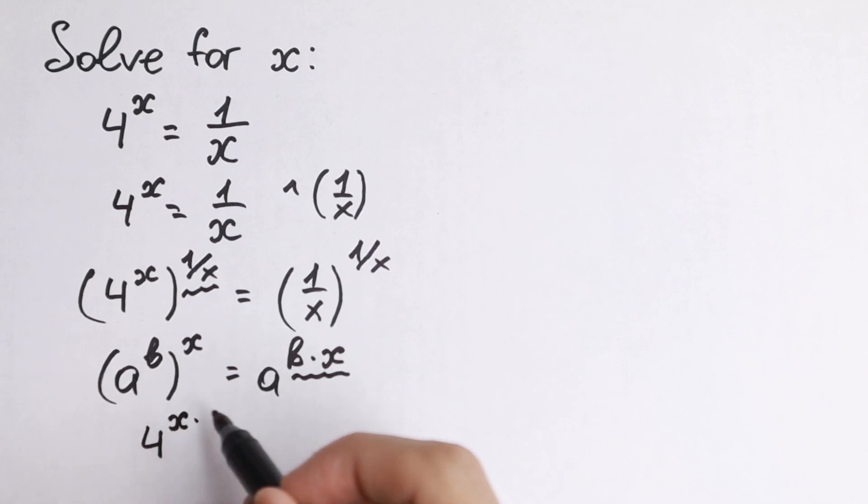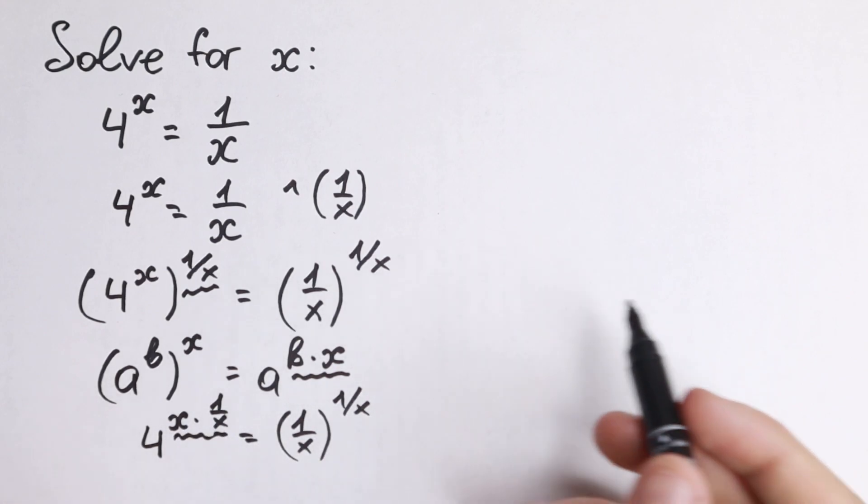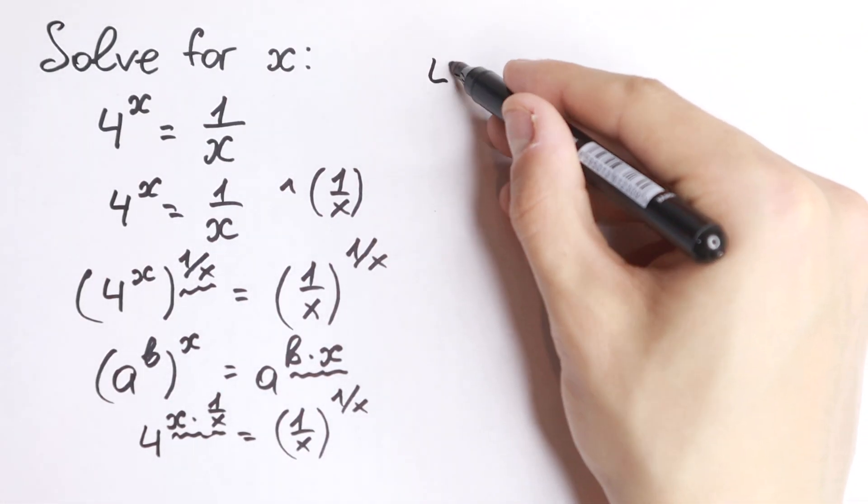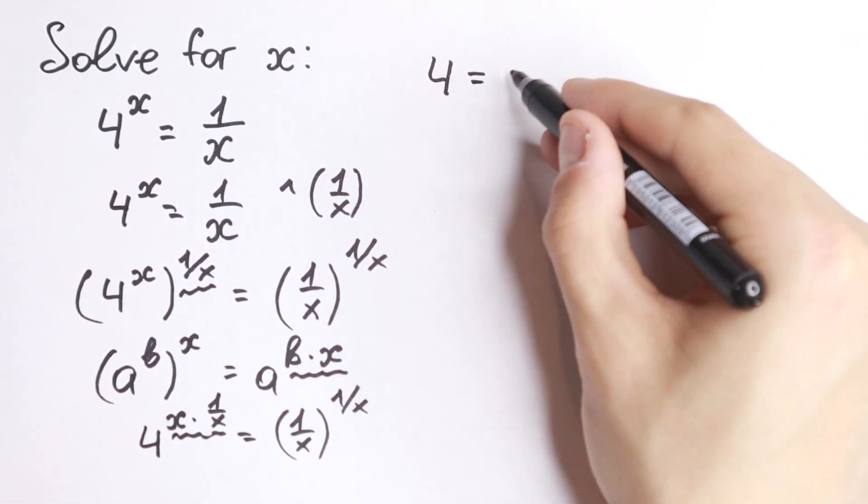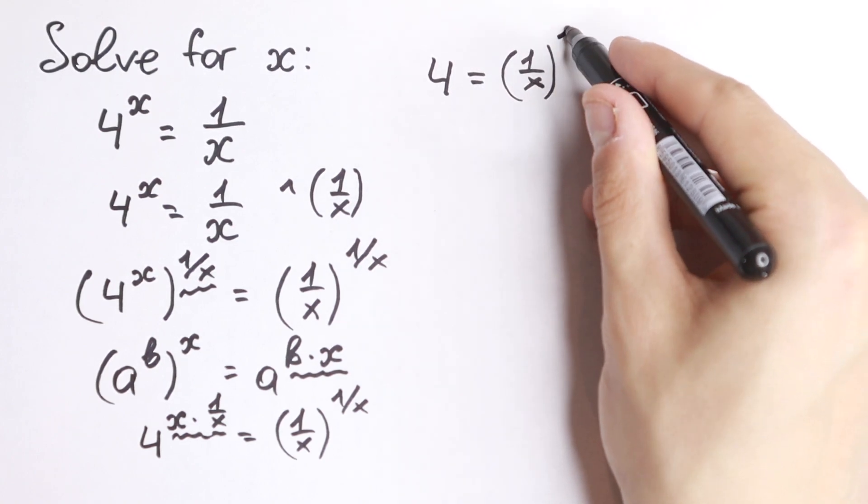Why is this good for us? Because 4 to the power x times 1 over x - we have 1 over x right here, and 1 over x right here. If we multiply these two values, we will have x times 1 over x, which equals 1. So as a result we will have 4 on the left hand side, and on the right hand side 1 over x to the power 1 over x.